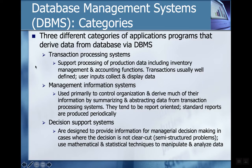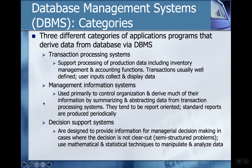Decision support systems take the information generated and put it into a form that facilitates decision making. These three types of applications are aligned with data, information, and knowledge — transaction processing systems equal data, management information systems equal information, and decision support systems deal with knowledge.